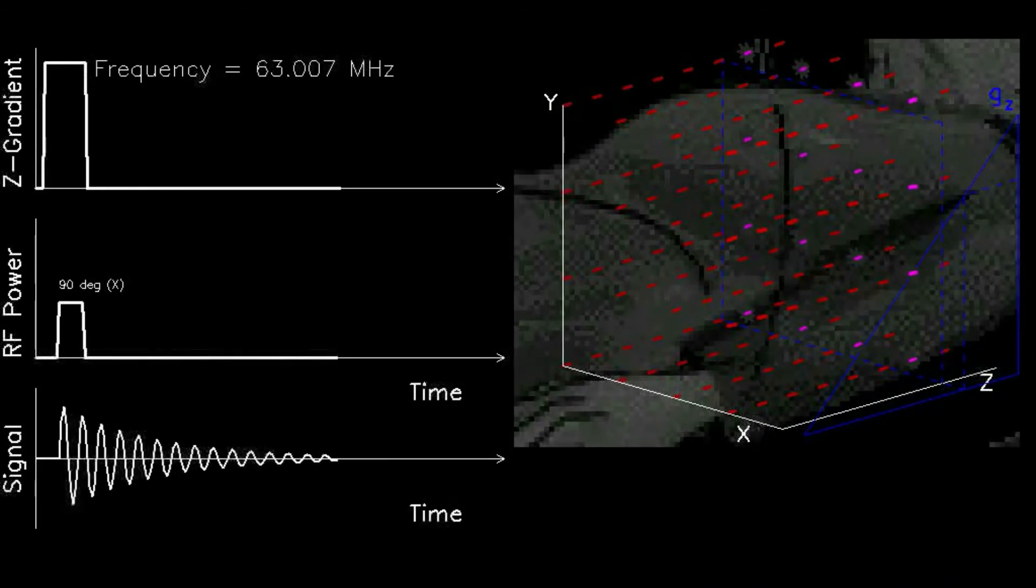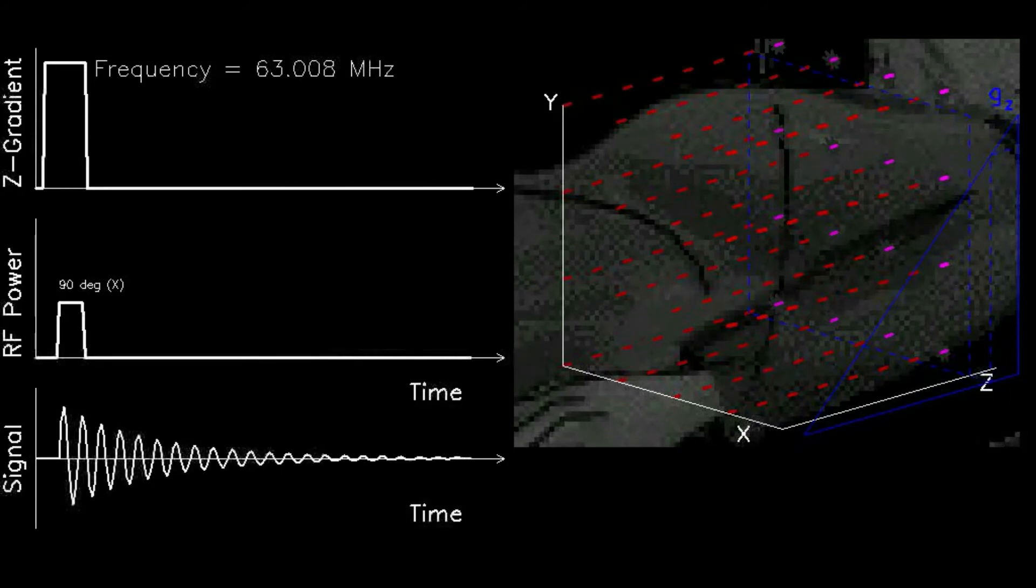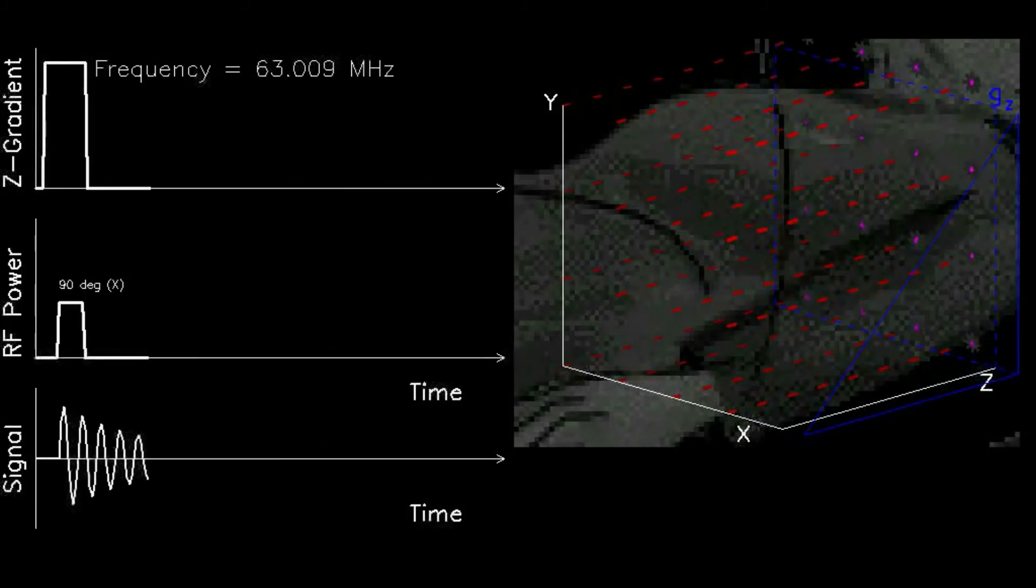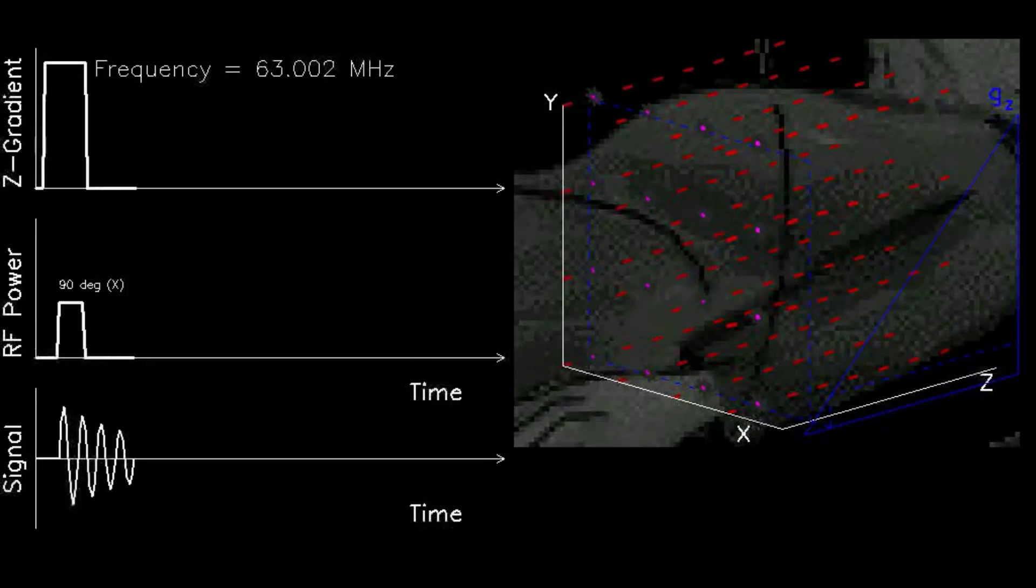All of the other remaining spins are not involved and can be neglected. The spins are then allowed to T1 decay and the process is exactly repeated six more times, except that the 90 degree RF frequency is slightly changed each time. For example, the second time to 63.001 megahertz.